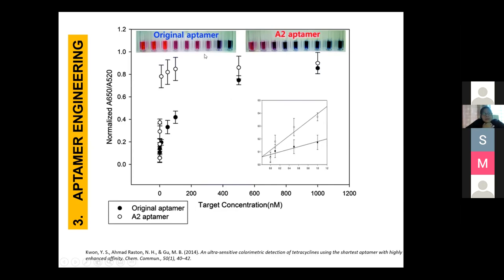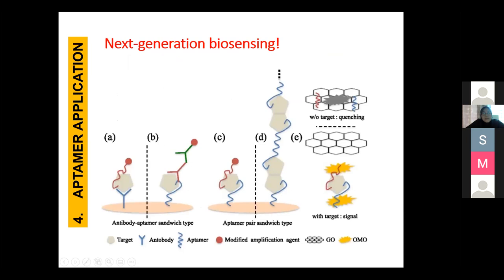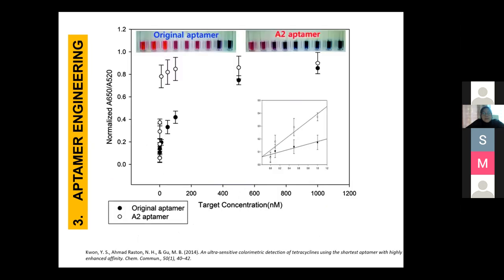The original aptamer was the full-length sequence, but by using the truncated aptamer, we enhanced the affinity. However, we lost the specificity — that's the limitation of truncation. If you're lucky, you can get both high affinity and high specificity. But it depends on your purpose — in this study, we wanted to detect the tetracyclines group, not a specific individual molecule, so losing cross-reactivity specificity within the group was acceptable.